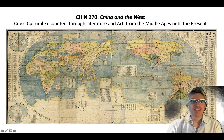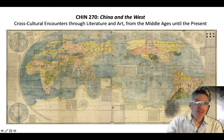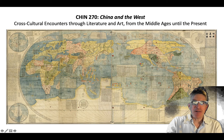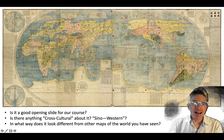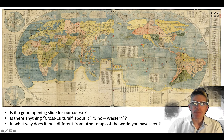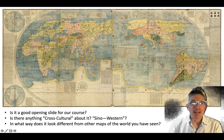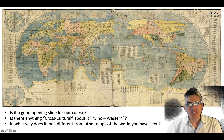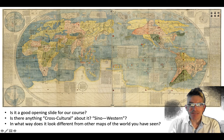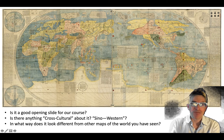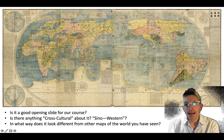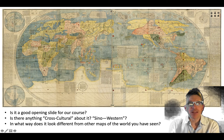Welcome back to Chinese 270, China and the West, week one. You've already seen this map a few times — this beautiful map. If we were not in an online class but in a classroom, I would use this map as a teaser and throw some questions at you, but I'm going to throw those questions at you anyway as we make our way through weeks one, two, and three.